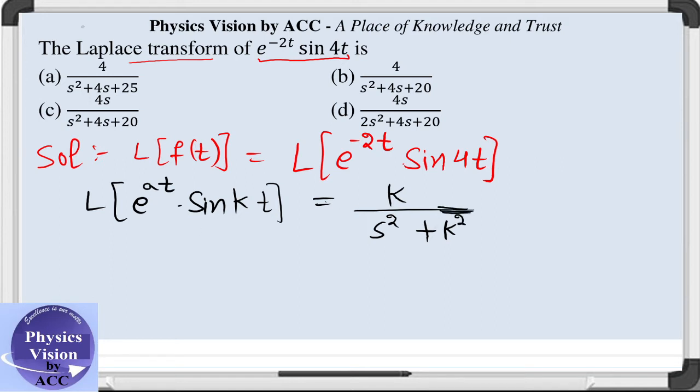So the formula for sine k t only is k upon s square plus k square.